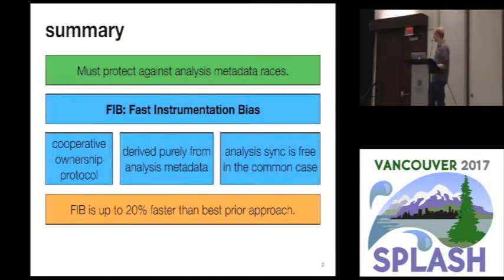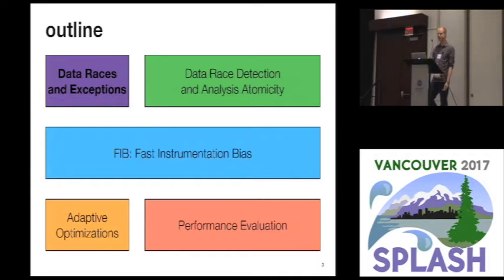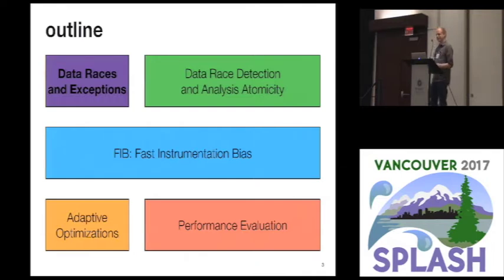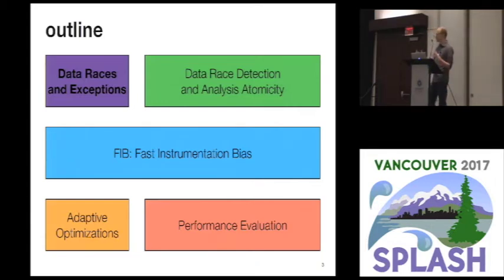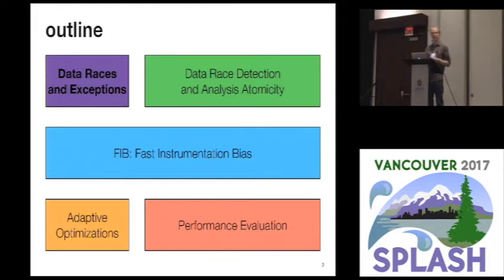We found in our evaluation that FIB is up to 20% faster than the best prior approach for this. In the rest of the talk, I'm going to review data races and give a little background on data race detection, as well as this general idea of providing analysis atomicity — making sure our analysis actions are safe in a multithreaded world. I'll give an overview of the highlights of our FIB system and protocol, touch quickly on some adaptive optimizations, and then take a look at performance evaluation.